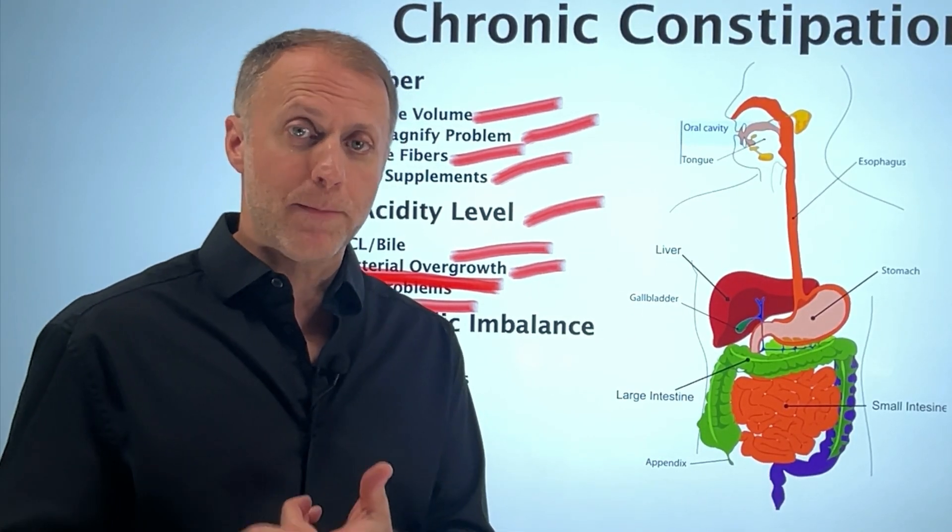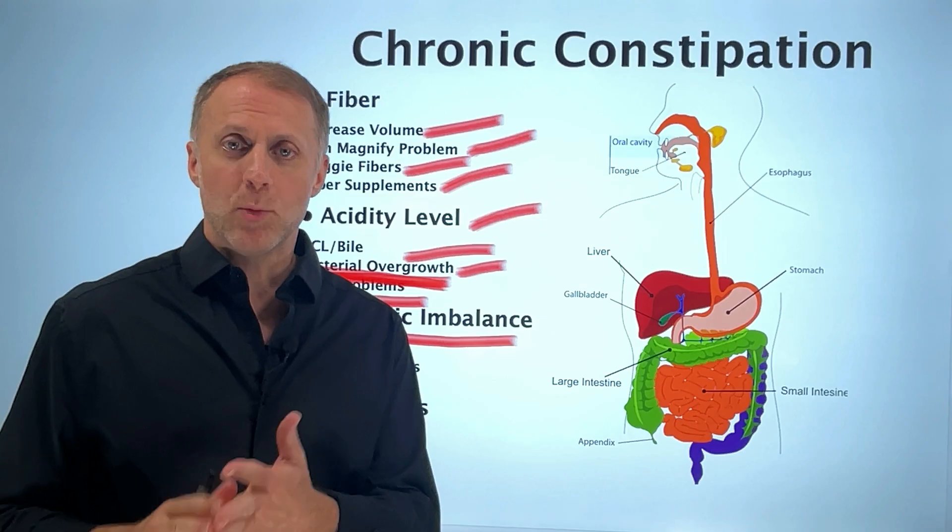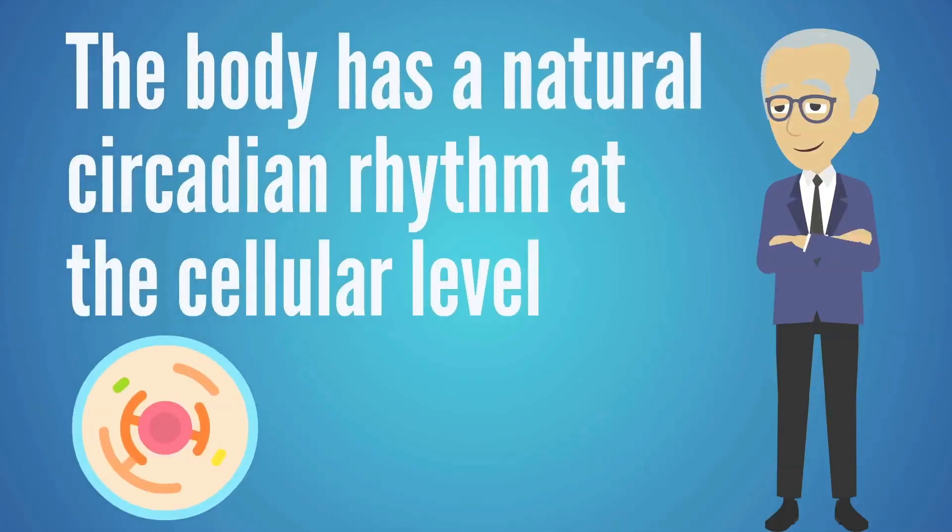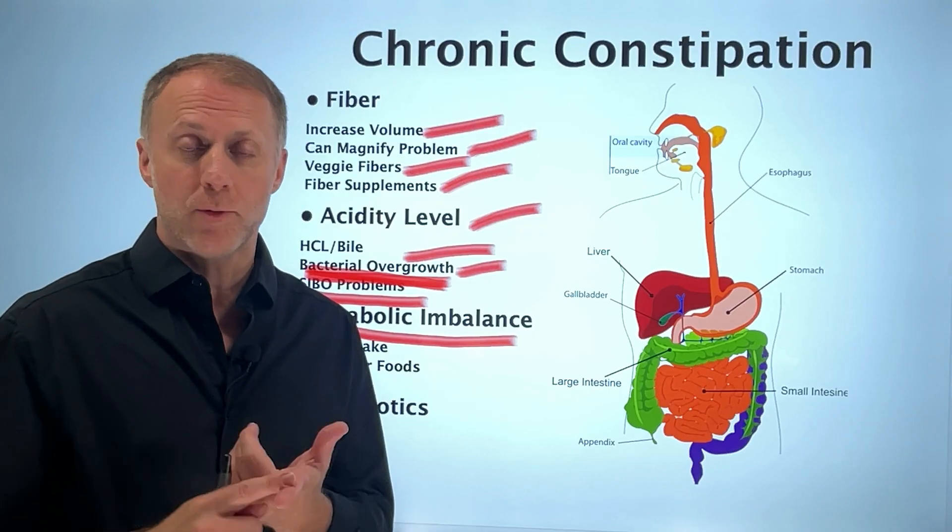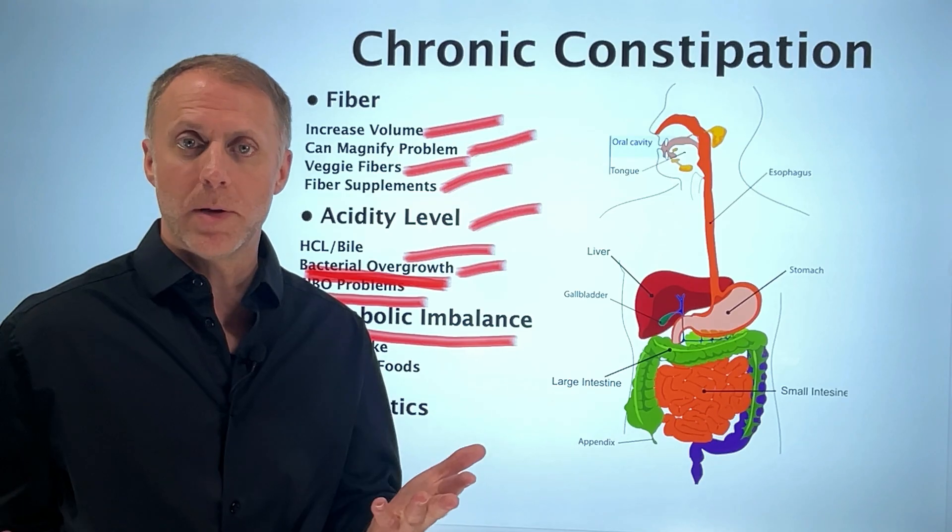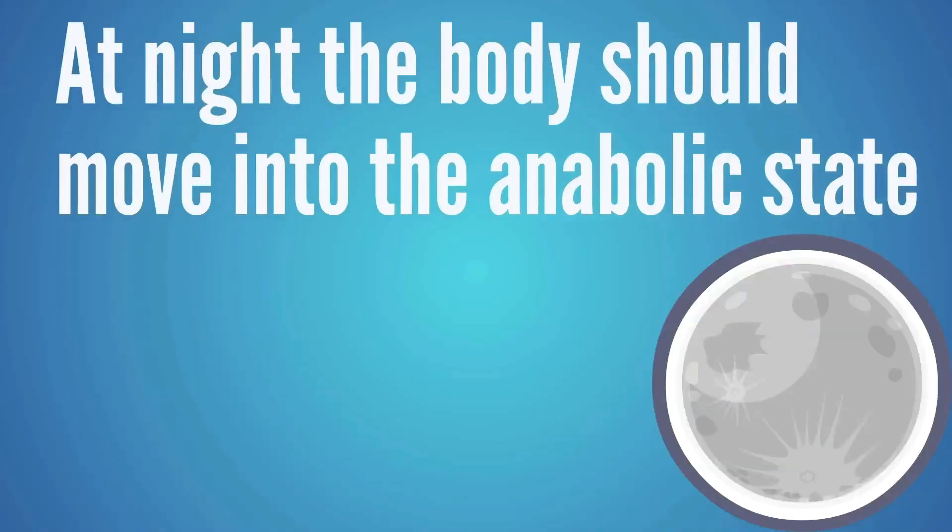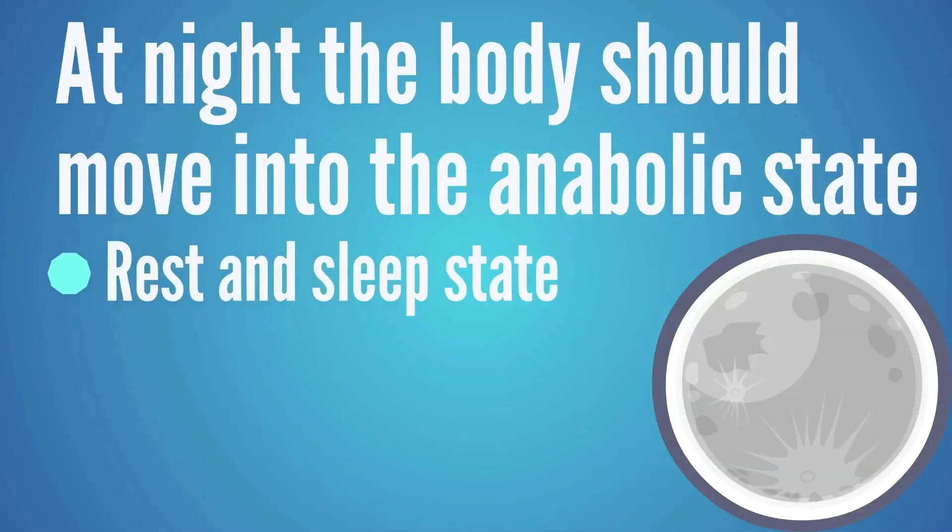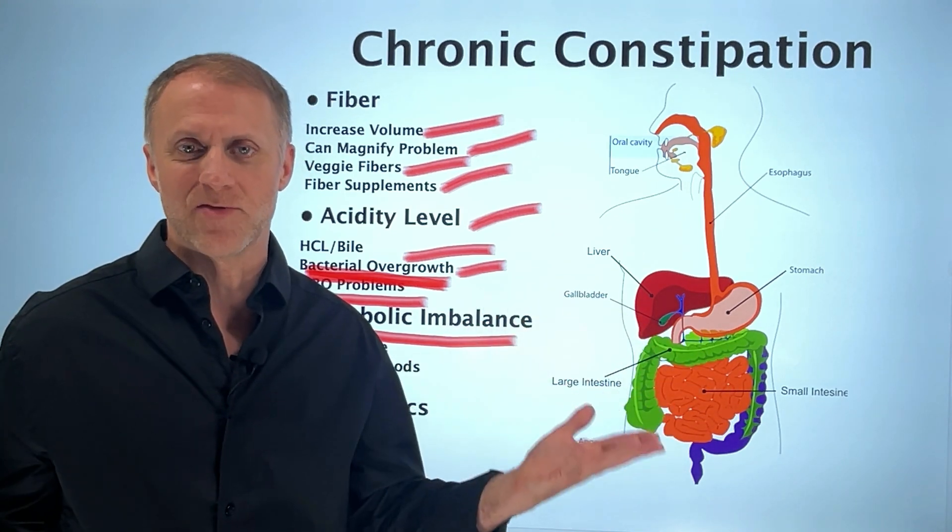Now when we understand what we call an anabolic imbalance, this situation can get even worse. It was Dr. Emmanuel Revici who helped us understand that the body has a natural circadian rhythm at the cellular level. During the day, the body should be in what's called a catabolic state where it's very good at creating energy and breaking down tissues so they can be rebuilt and renewed. And then at night, the body moves into an anabolic state where the body is very good at sleeping and resting and rebuilding and repairing. Both of these states are appropriate.